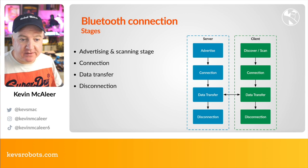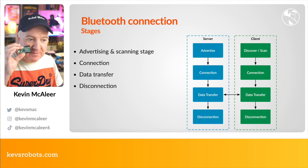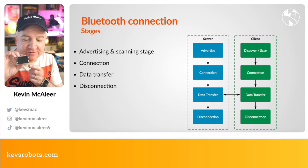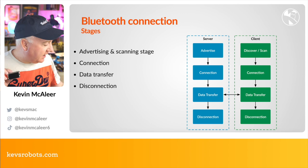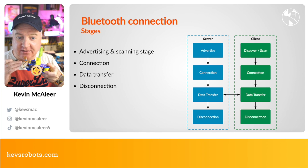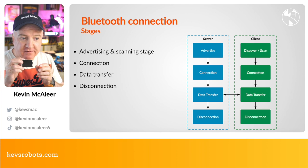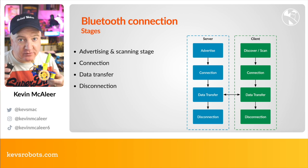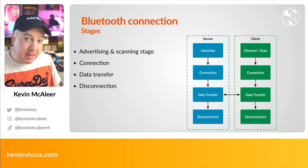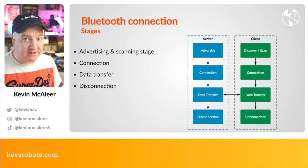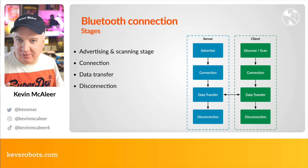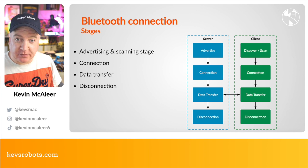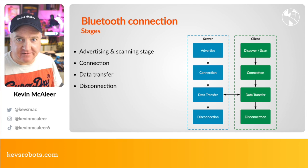Bluetooth goes through a series of different connection stages. First is advertising — the server advertises that it has a service available. In our case, a Raspberry Pi Pico with a display pack will be the server, and the robot will be the client. The client scans for any remote control nearby, then establishes a connection. You don't have to pair devices, but you do have to find and connect to them. Pairing is an extended handshake; connection is a more lightweight link. On the Raspberry Pi Pico's MicroPython implementation, you can have one connection at a time.